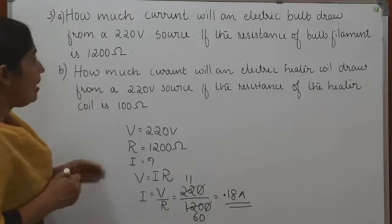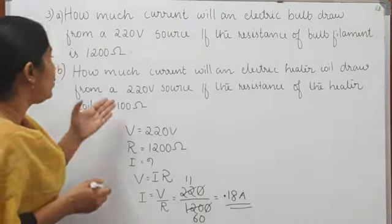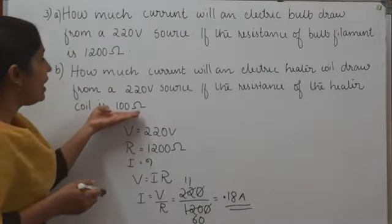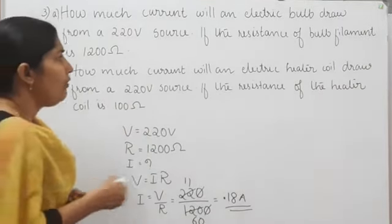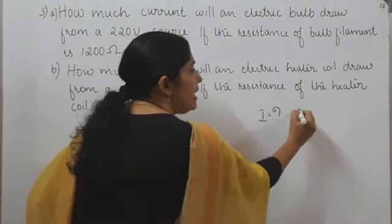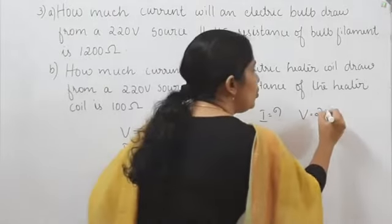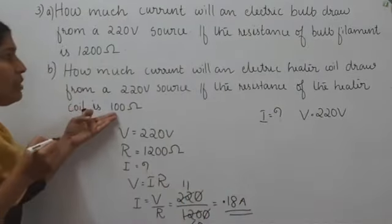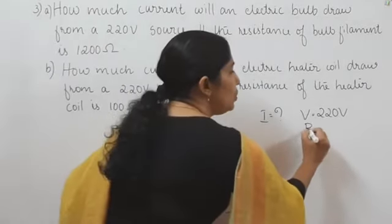In the next question: how much current will an electric heater coil draw from a 220 volt source if the resistance of the coil is 100 ohm? Voltage is 220 volt and resistance R is equal to 100 ohm.